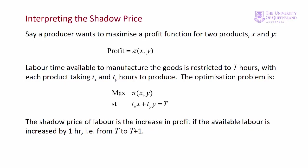Imagine a firm produces two goods and the profit function is π(x, y). The firm wants to maximise profit subject to a labour constraint. Total hours of labour available are T. Product x takes tₓ hours to produce one unit and product y takes t_y hours to produce one unit. The labour constraint is tₓ·x plus t_y·y equals T. If T increases to T plus 1, then Δπ equals lambda — so the firm should be willing to pay up to lambda for one extra hour of labour. The shadow price is the maximum the firm should be willing to pay; the market price is what they actually have to pay. If the shadow price exceeds the market price, the firm should employ an extra hour of labour since that will increase profit.